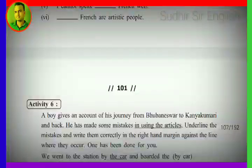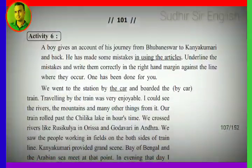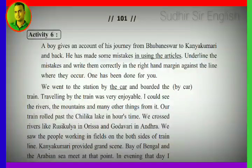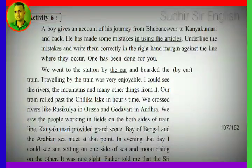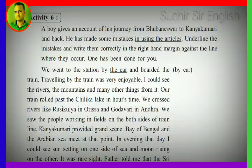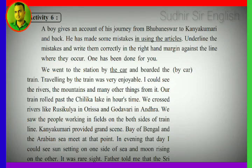The answers will be posted in a separate video very soon. Also, Activity 6: a boy gives an account of his journey from Bhubaneswar to Kanyakumari and back. He has made some mistakes in using articles. Underline the mistakes and write the correct forms in the right-hand margin against the line where they occur. One example has been done: 'We went to the station by the car' — it should be 'by car' — no article before car in general transport usage.